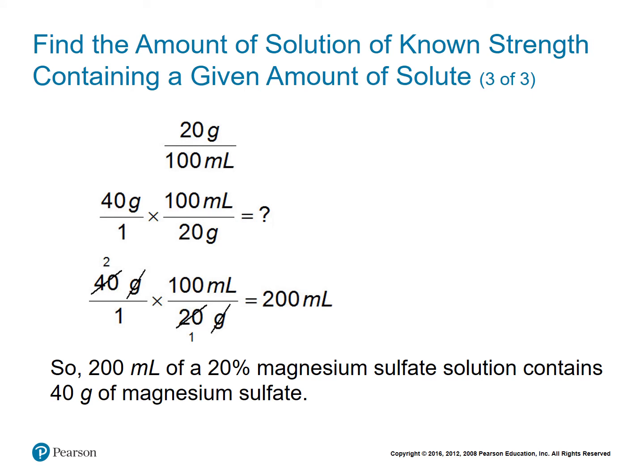We have 20 grams of solute per 100 milliliters of solution as our strength. We take our 40 grams of drug and multiply it by the reciprocal of our strength — that's 100 milliliters over 20 grams. Simplifying: 40 divided by 20 gives us 2, then 2 times 100 equals 200 milliliters. The grams divide out. So 200 milliliters of a 20% magnesium sulfate solution contains 40 grams of magnesium sulfate.